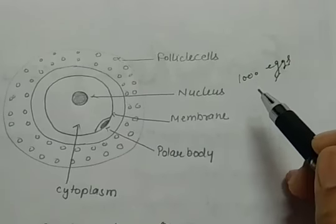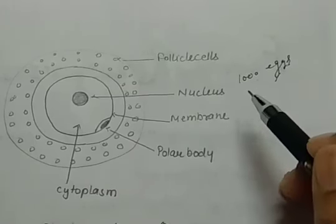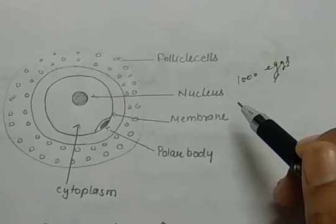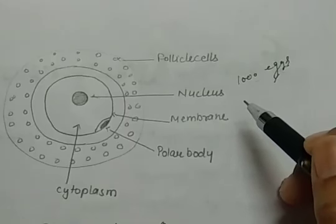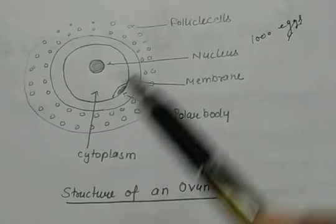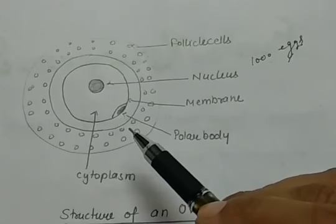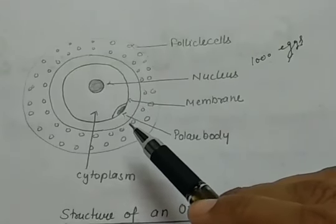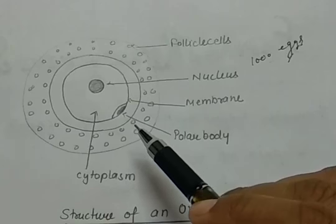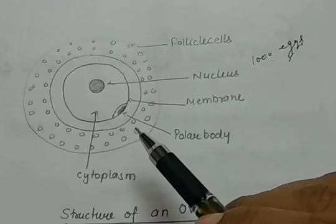We will understand what happens to the egg if it is not fertilized — the menstrual cycle and menopause — in the next lecture. The Graafian follicle, which is the matured egg, gets ruptured at an interval of 28 days if it is not fertilized. This we will understand in the menstrual cycle.